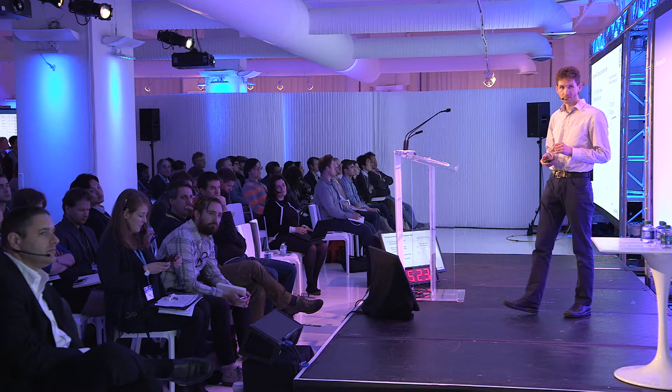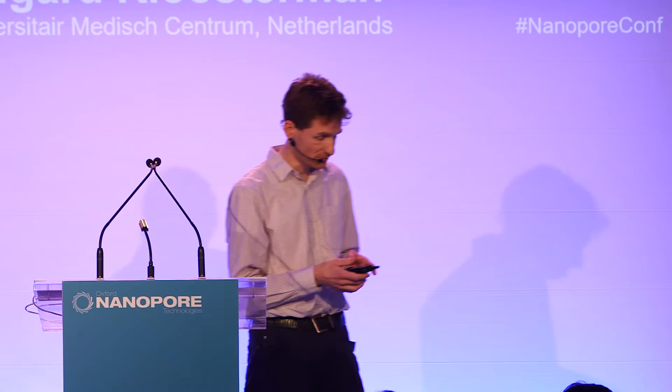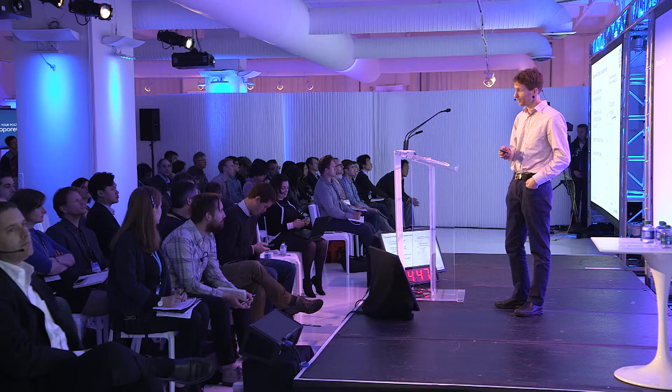We took a set of structural variations overlapping between Illumina and nanopore data — just over 2,000 of them — and did genetic phasing of these SVs using the Illumina trio data to obtain a ground truth set. Then we phased these SVs by the nanopore reads and compared the data sets. On the right side you see a ROC curve showing the specificity and sensitivity of structural variation phasing using the nanopore data, and I think it looks very good already without much tweaking.